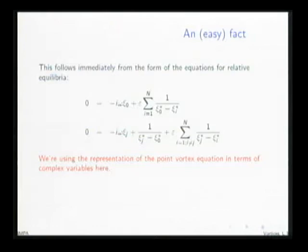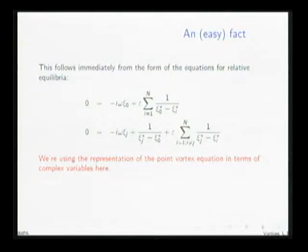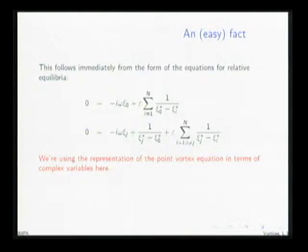That's a very simple argument. I've taken the equations for the point vortices and rewritten them in a rotating frame of reference with speed omega. In the rotating frame, the relative equilibria are stationary, so the time-derivative term drops out. For the large vortex equation, as epsilon goes to zero this term drops out—since the vortices don't collide the denominator is bounded away from zero—so we see that C_0 must go to zero. A similar analysis for the second equation shows that as epsilon goes to zero, C_j must approach the unit circle.